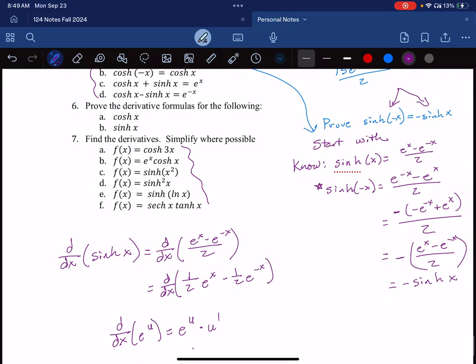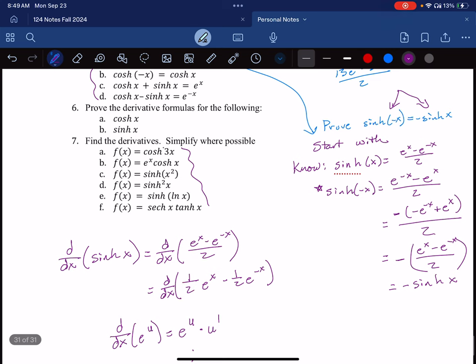And then I'm going to use, because this input to cosh of x is more complex, I'm going to use the chain rule. So f prime of x should be sinh 3x times the derivative of the inside 3. And I'm just going to apply that, those, you know, sort of shortcut formulas. Does that make sense?